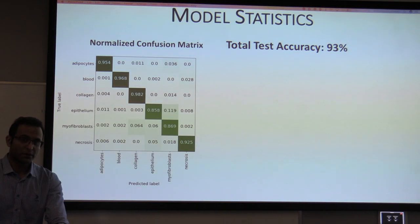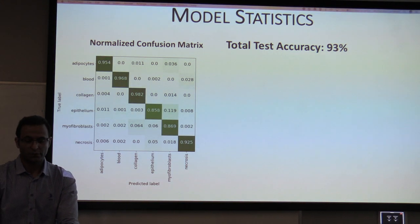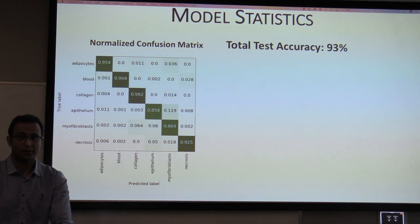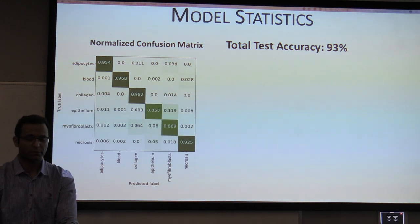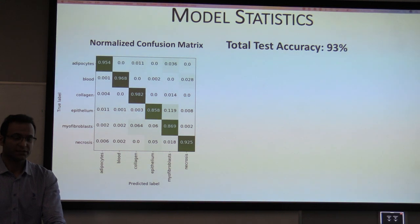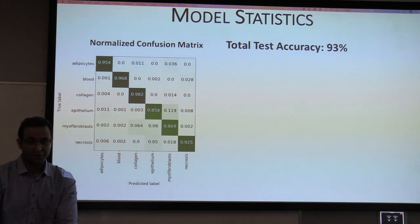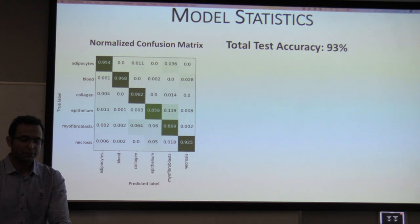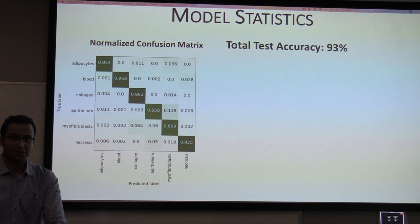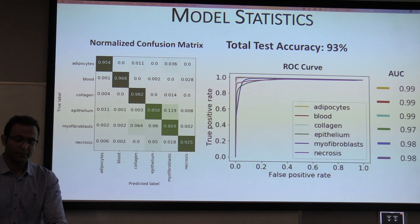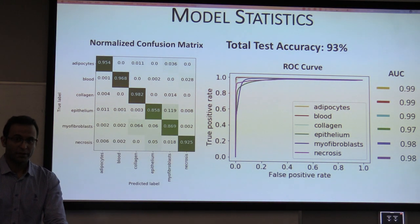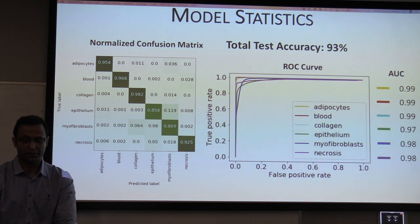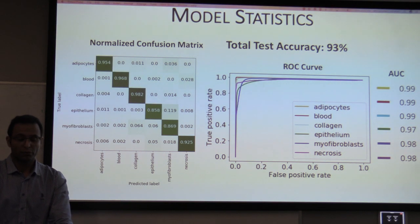In this slide, I show some model statistics. The total test accuracy is about 93%. Here is a normalized confusion matrix with the true label on the y-axis and the predicted label on the x-axis, and the values on the diagonal show the true positive rates. This plot shows the ROC curve for all the classes, and the area under the curve for the classes is between 0.97 and 0.99.